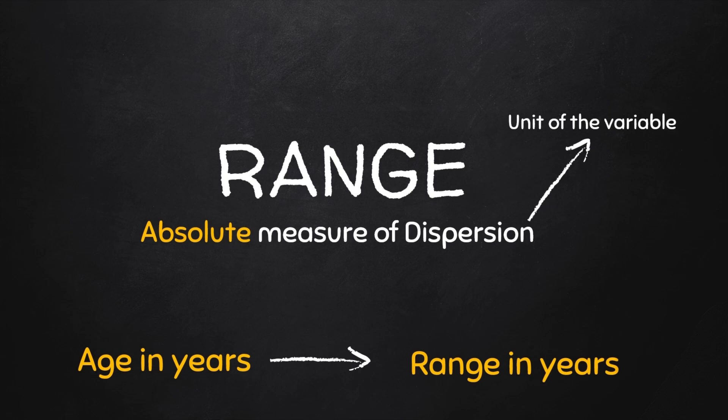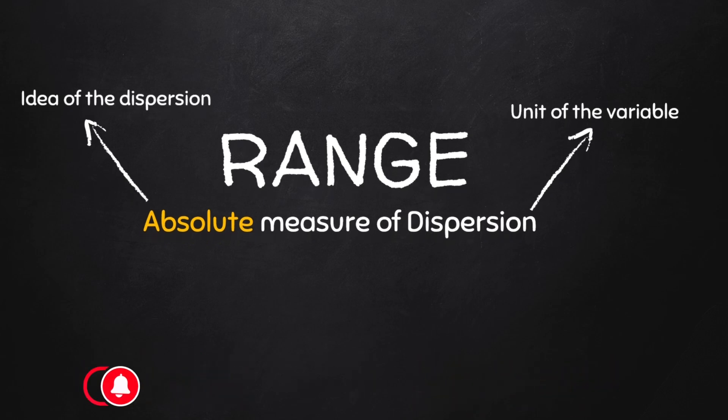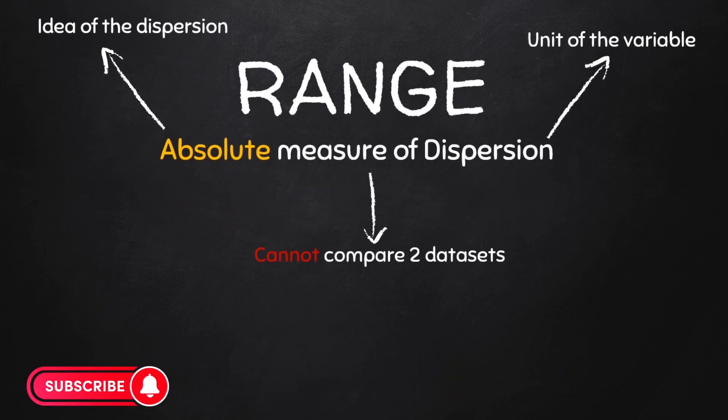Though this absolute measure of dispersion gives an idea of the amount of dispersion or spread in a set of observations, it cannot be used to compare the variation between two or more series of data sets because it's absolute.